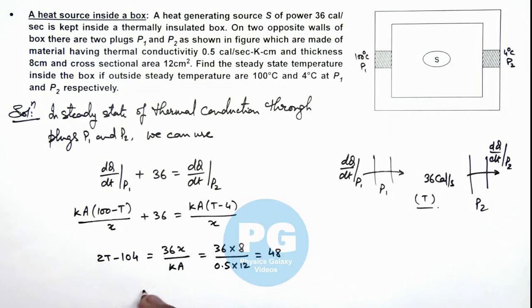So the value of T inside is directly given as 152 by 2, that is equal to 76 degree centigrade. That is the result of this problem.